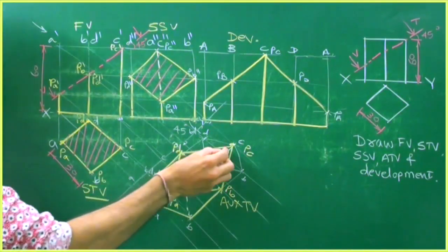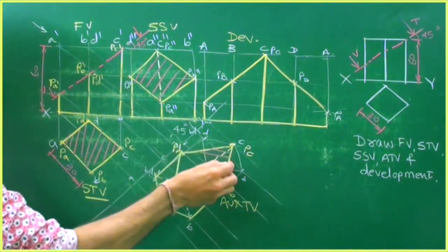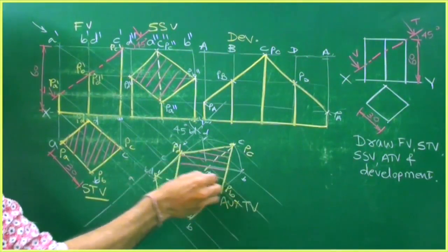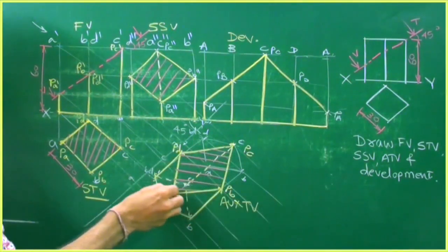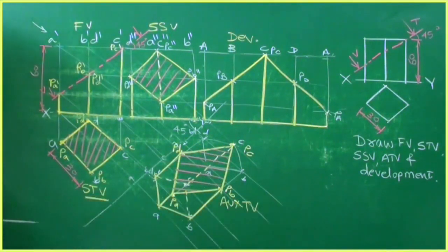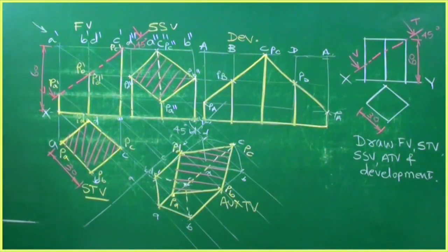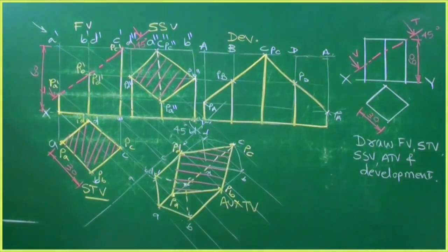Some lines will be dotted and we draw hatch lines. We are done with the front view, sectional side view, development of the remaining solid, auxiliary top view, and sectional top view.